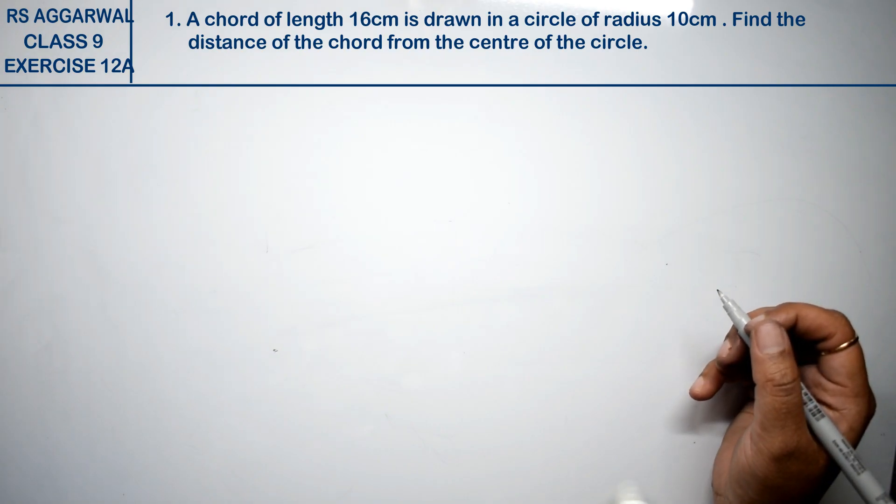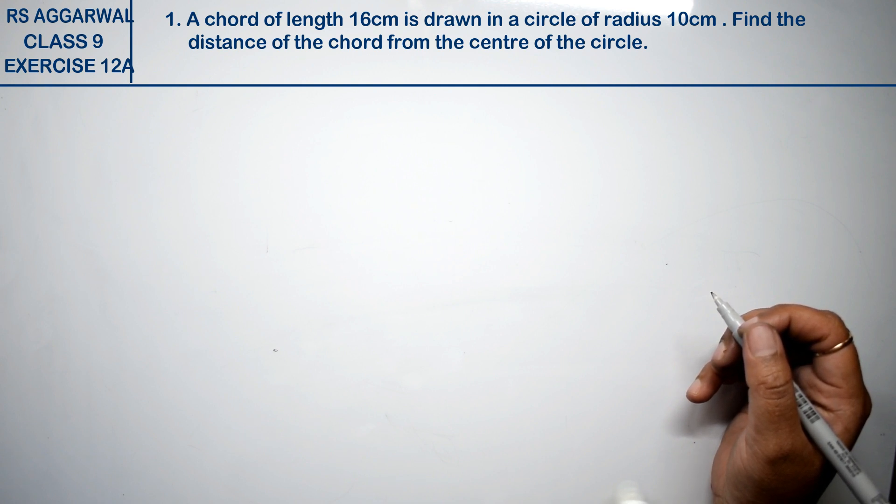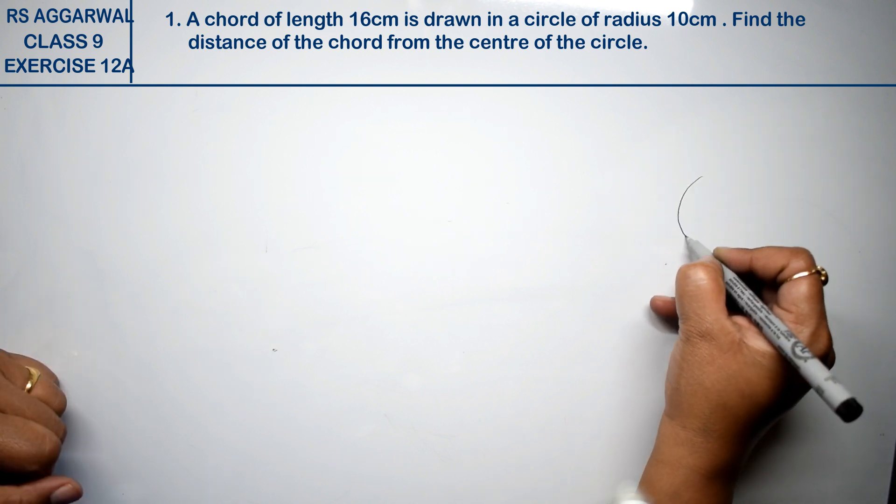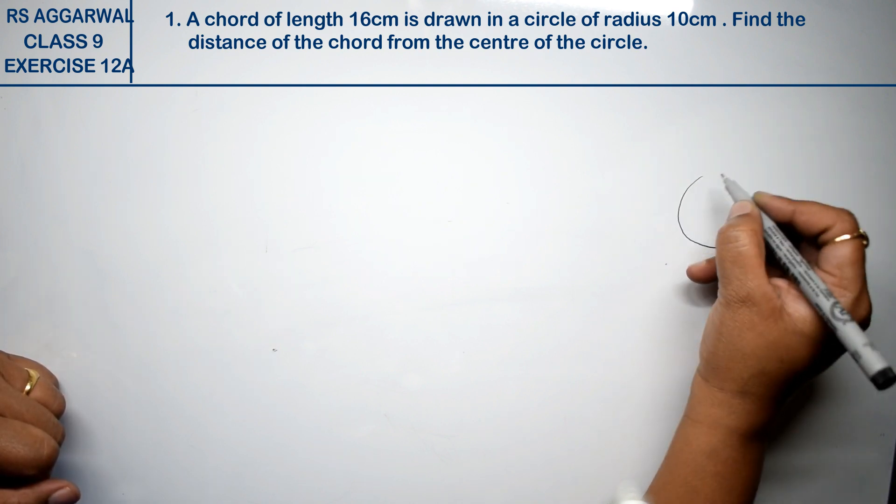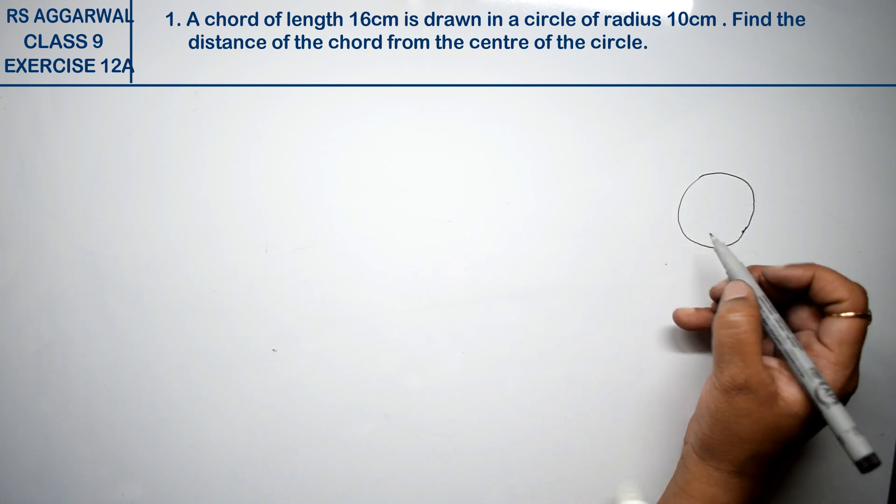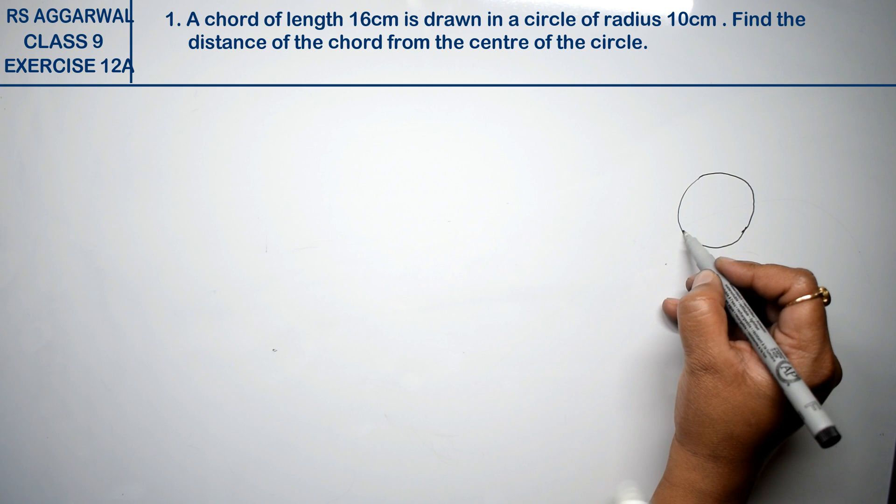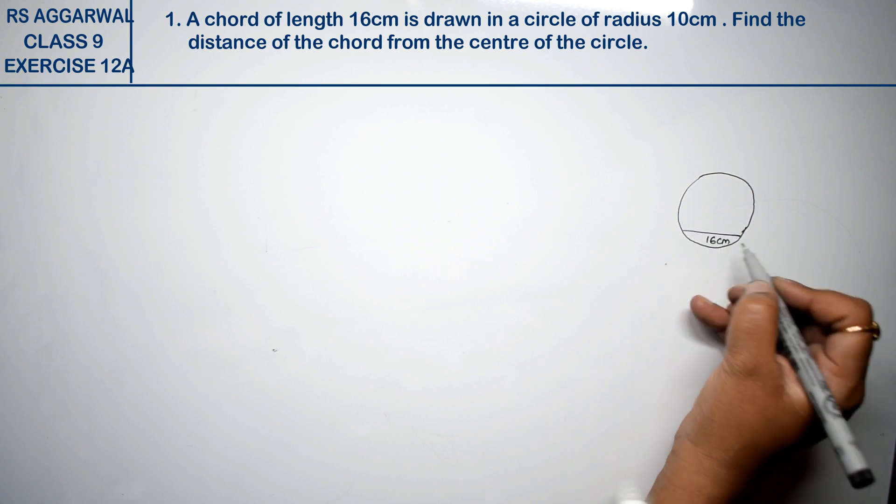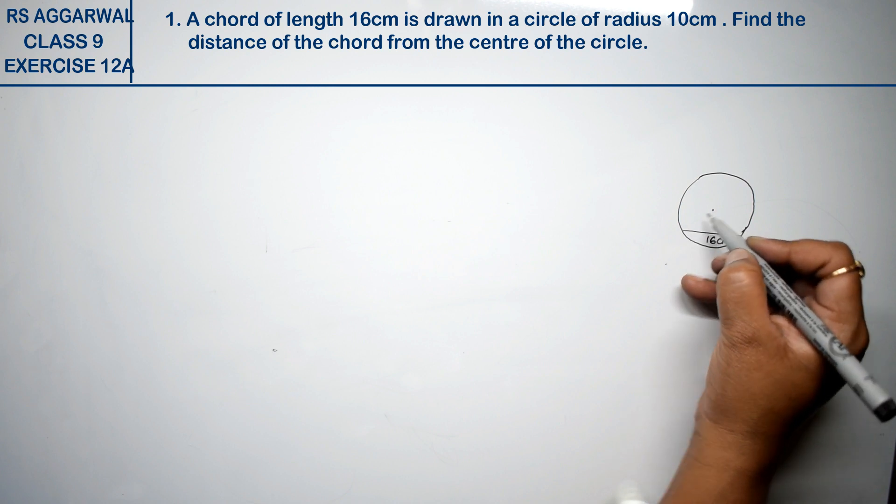Let's do question number first of exercise 12A, that is circles. Question number first is a chord of length 16 centimeters drawn in a circle of radius 10 centimeters. A circle has a chord that is 16 centimeters and radius that is 10 centimeters.